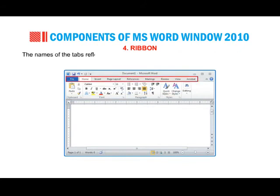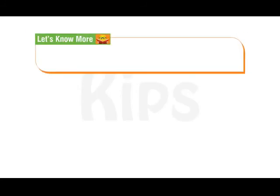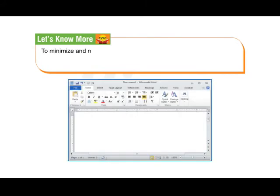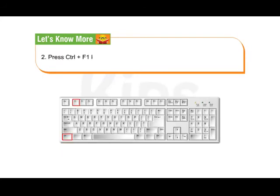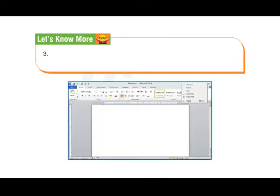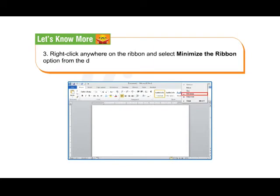The names of the tabs reflect their utility and purpose, as they are easy to understand and self-explanatory. To minimize and maximize the ribbon, follow any one of these steps: click on the Minimize the Ribbon button in the upper right corner; press Ctrl+F1 to display and minimize the ribbon; or right-click anywhere on the ribbon and select Minimize the Ribbon option. This will toggle the ribbon on and off.